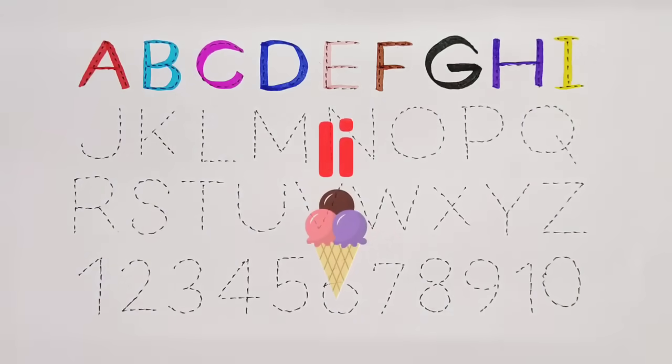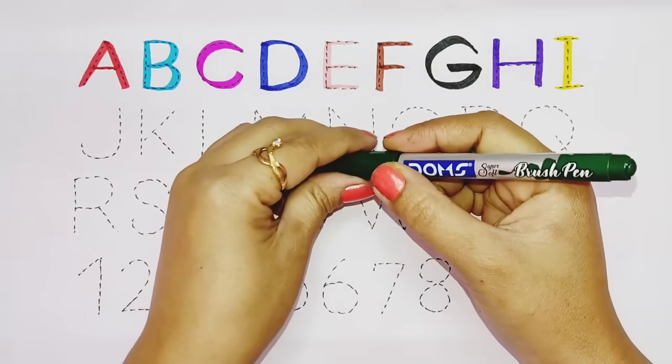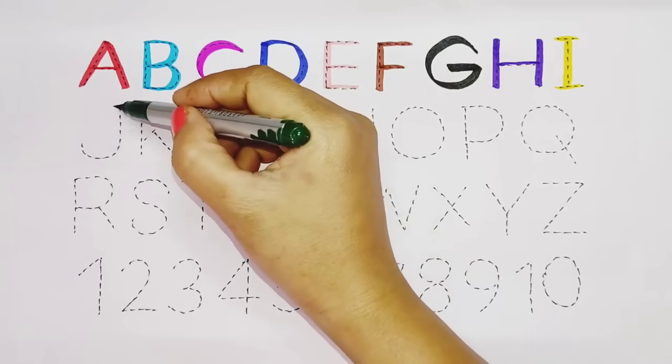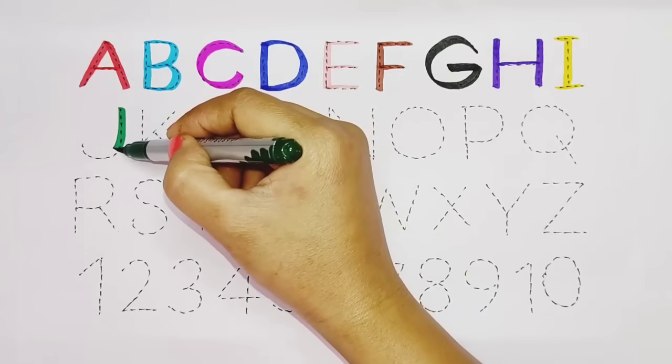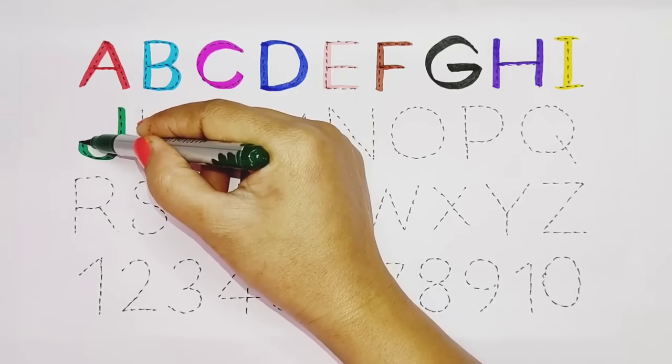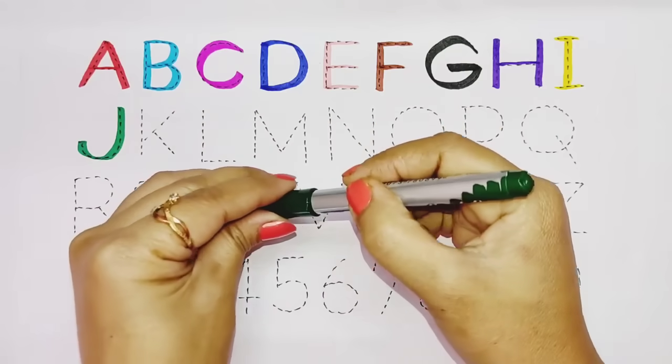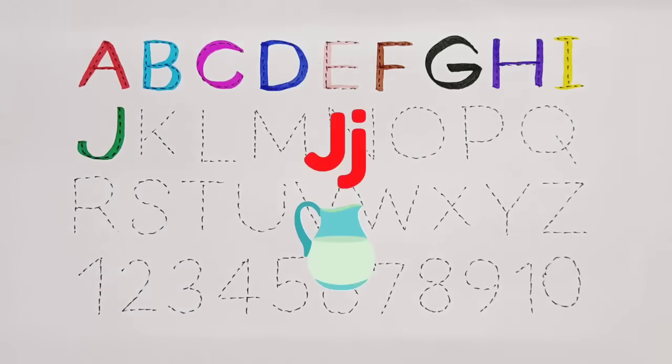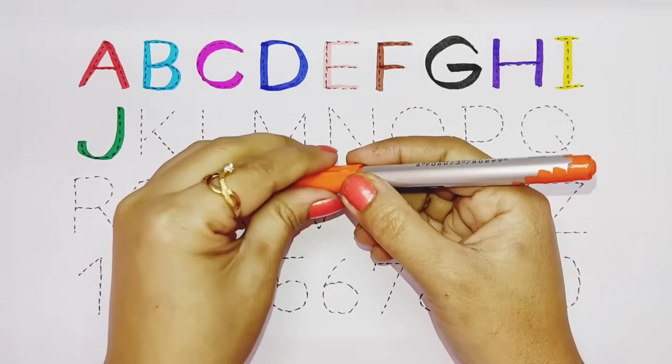I, I for Ice cream, green color. J, J for Jack, orange color.